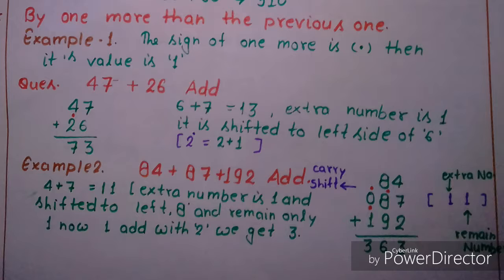For 47 plus 26, first we add 7 plus 6, which equals 13. The tens digit 1 is carried (shifted to the left), so we write only 3. Then we add the tens digits: 4 plus 2 equals 6, but because of the carried 1, it becomes 4 plus 3 equals 7. So the answer is 73.